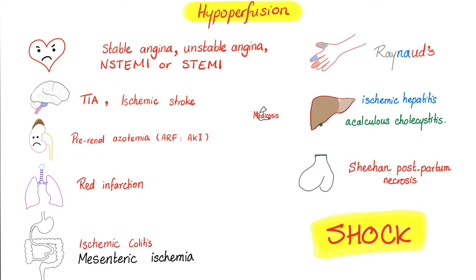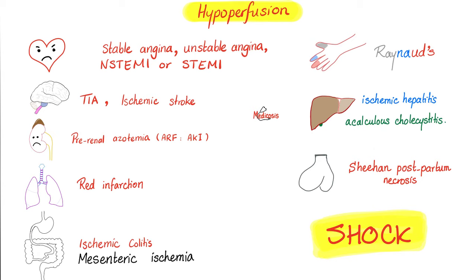Here's the entire book of internal medicine in one slide. If the heart is not perfused, you can get angina or myocardial infarction. If the brain is not perfused, the angina of the brain is called transient ischemic attack; the myocardial infarction of the brain is called ischemic stroke. Hypoperfusion to the kidney gives pre-renal azotemia, or pre-renal failure. Hypoperfusion to the lung gives red infarction — not pale — because the lung has a dual blood supply: bronchial and pulmonary vessels. Hypoperfusion to the small intestine equals mesenteric ischemia; to the large intestine, ischemic colitis or colonic ischemia. Hypoperfusion to the fingertips: Raynaud's phenomenon. Hypoperfusion to the liver: ischemic hepatitis. To the gallbladder: acalculous cholecystitis.